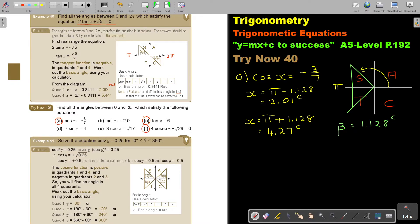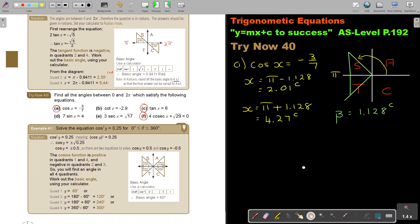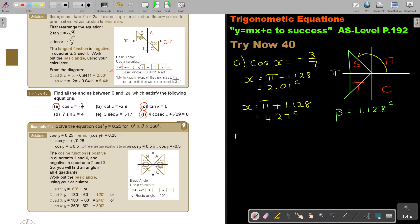Let's look at number c. So c is just tan x equals 6. Now remember, this can usually be bigger, but I'm now in radians. Where is tan positive? Think of my cos diagram. Tan is positive in the first quadrant and in the third quadrant. So first I get my basic angle.